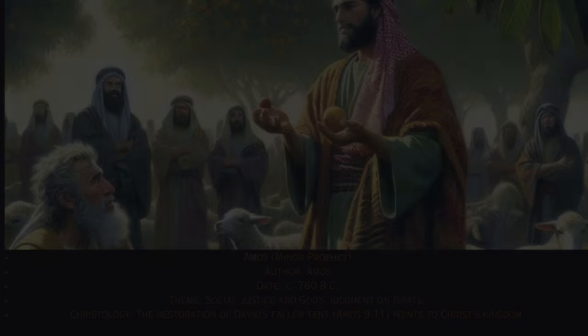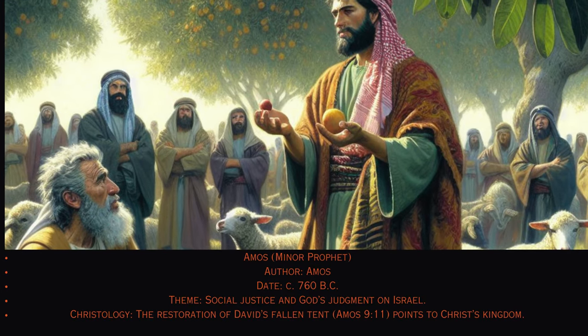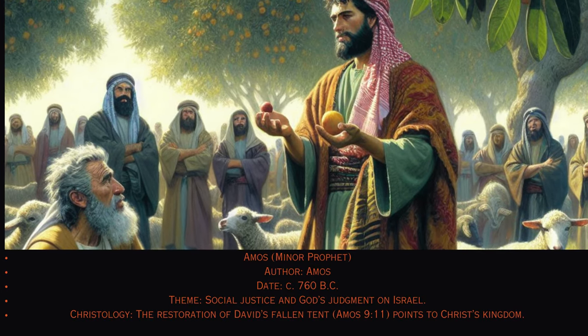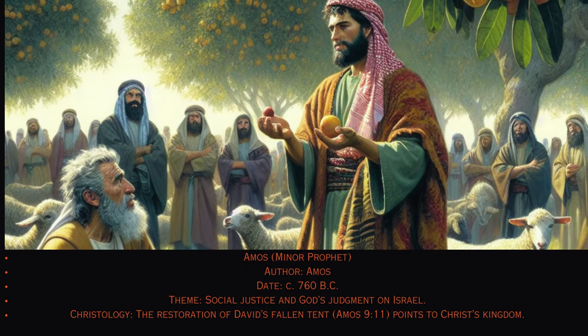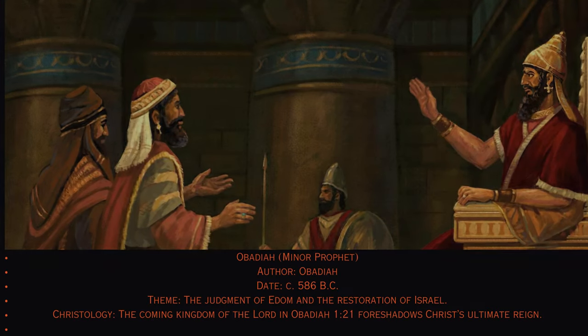30. Amos. Minor prophet. Author: Amos, circa 760 B.C. Theme: Social justice and God's judgment on Israel. Christology: The restoration of David's fallen tent (Amos 9:11) points to Christ's kingdom.